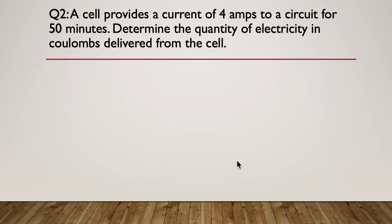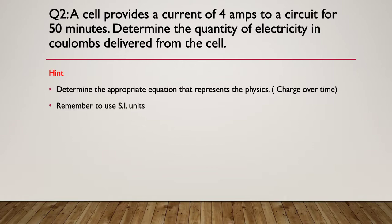Question two. A cell provides a current of four amps to a circuit for 50 minutes. Determine the quantity of electricity in coulombs delivered from the cell. So similar to the first question. So pause here and have a go. So now let's give you a hint. Determine the appropriate equation that represents the physics. And remember, we're working in SI units. So that's amps and seconds for this particular thing. So pause here if you need to.